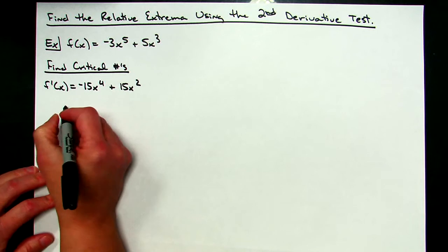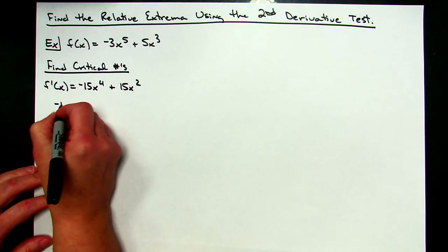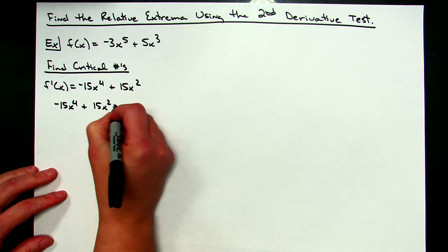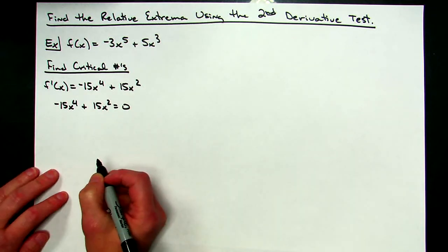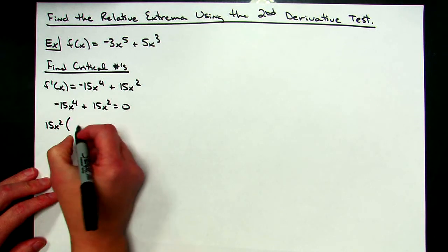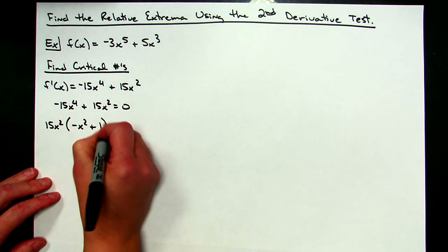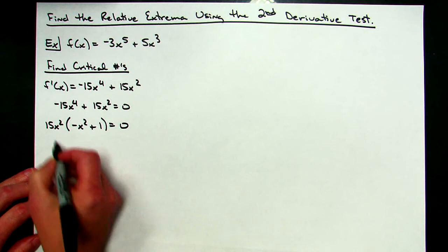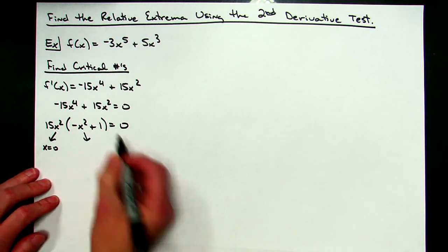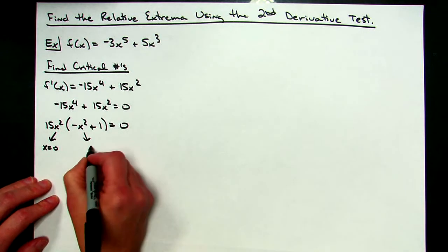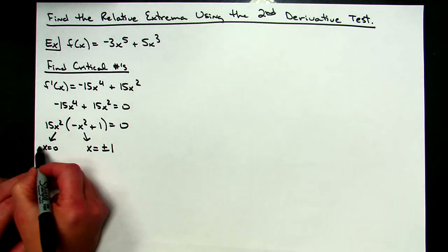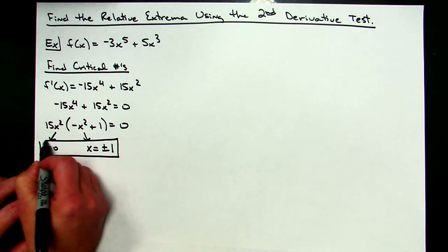I need to set that equal to zero and solve to find those critical numbers. So negative 15x to the fourth plus 15x squared equals zero. Factoring out the greatest common factor of 15x squared leaves me with negative x squared plus one. Setting both factors equal to zero, clearly x equals zero, and from the second factor I get x equals plus or minus one. Those are my critical numbers — that's where my relative extrema will live.